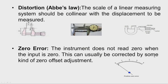Distortion is also known as Abbe's law. The scale of a linear measuring system should be collinear with the displacement to be measured. Taking the example of a micrometer, we keep the workpiece between the anvil and spindle, so the axis of the workpiece is collinear with the axis of the instrument, and in that case the distortion will be minimum.